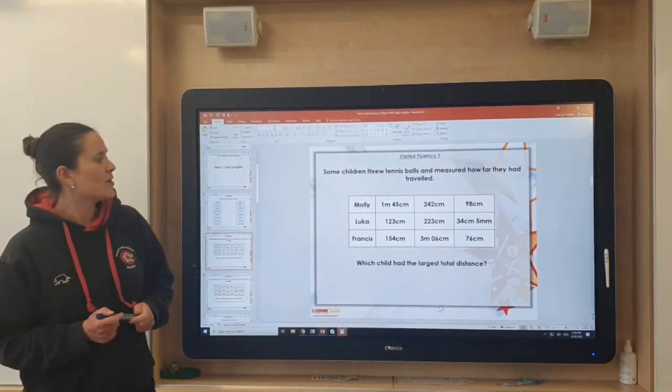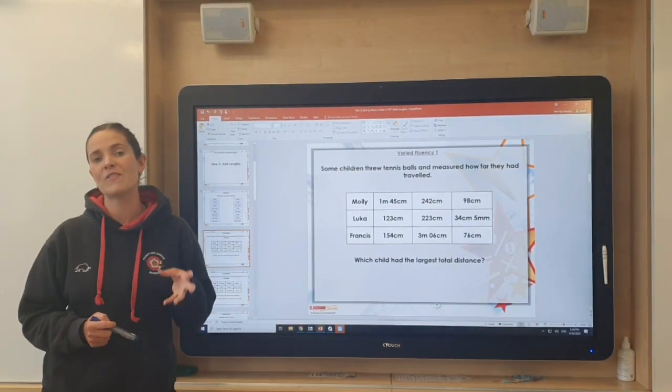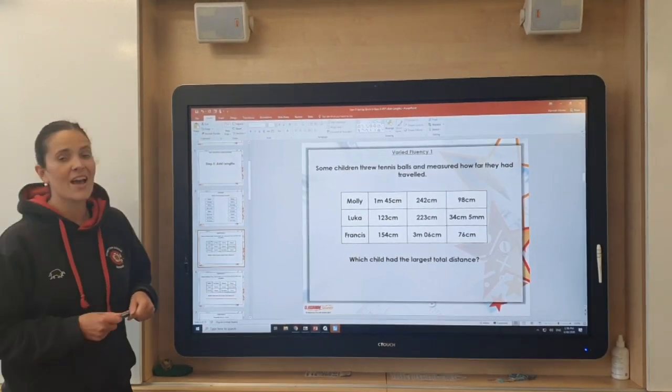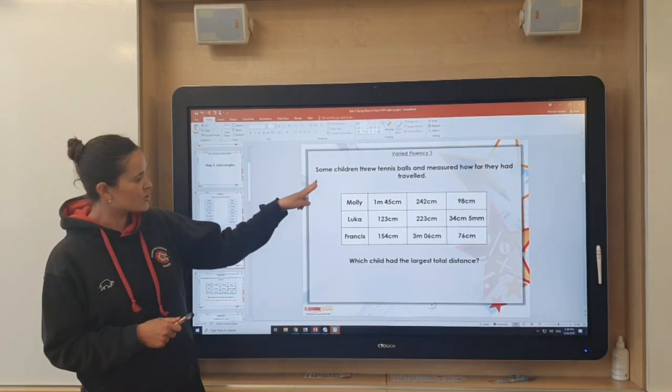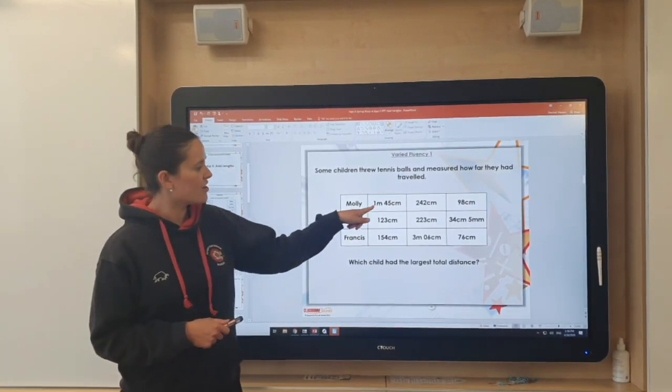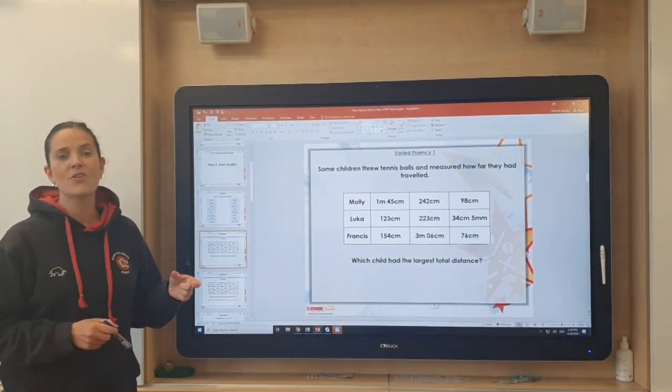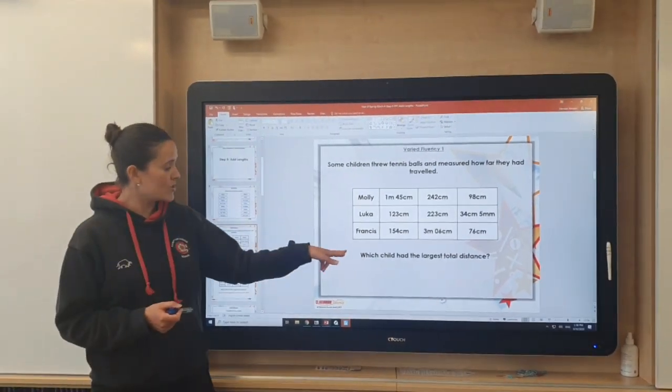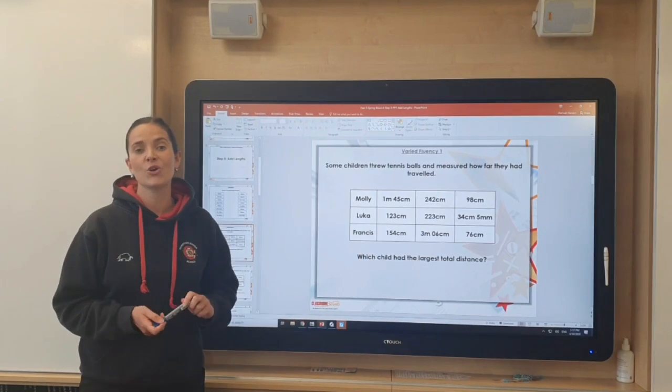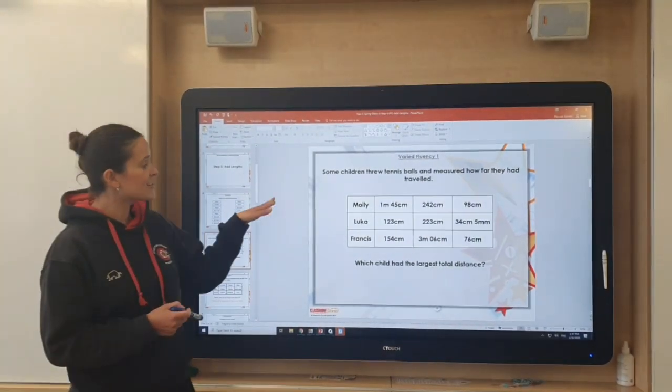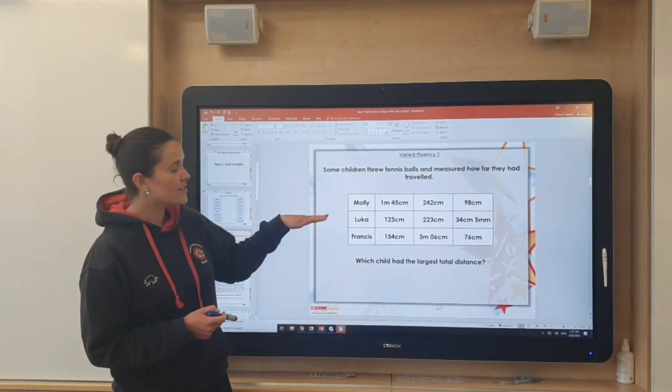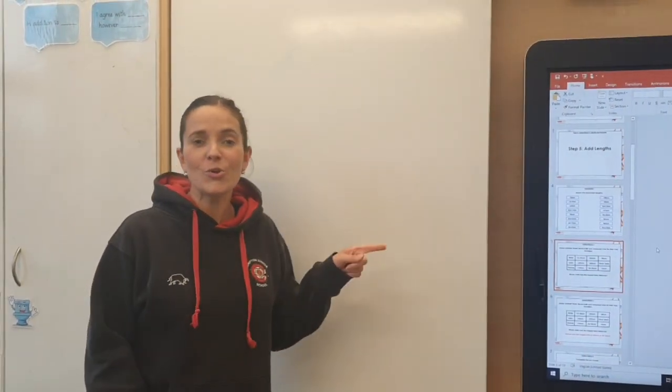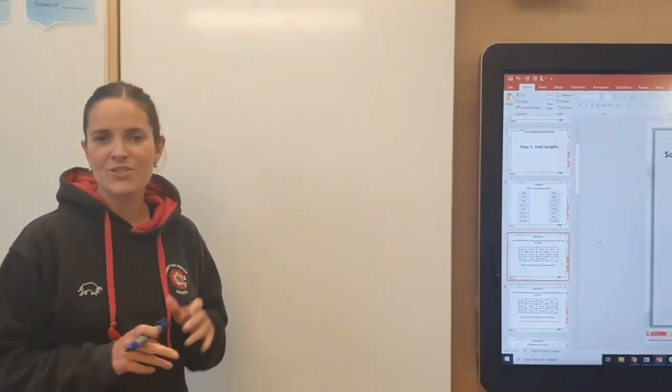The next example is this one here and this kind of question you will find on the work we've set you for today. It says some children threw tennis balls and measured how far they had travelled. So we've got 3 children here and next to each child's name there are 3 different measurements to show how far they were able to throw those 3 tennis balls. If we want to work out which child has thrown the longest total distance what we need to do is to add up the lengths that Molly has thrown, that Luca has thrown and that Francis has thrown.